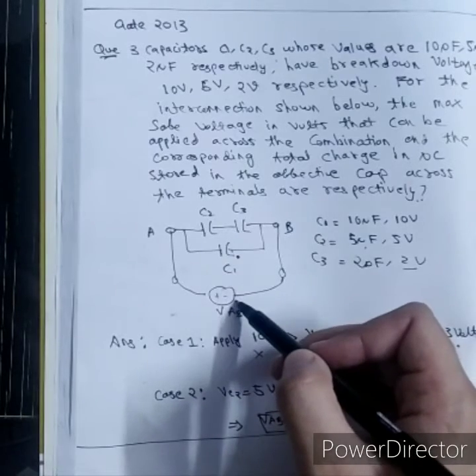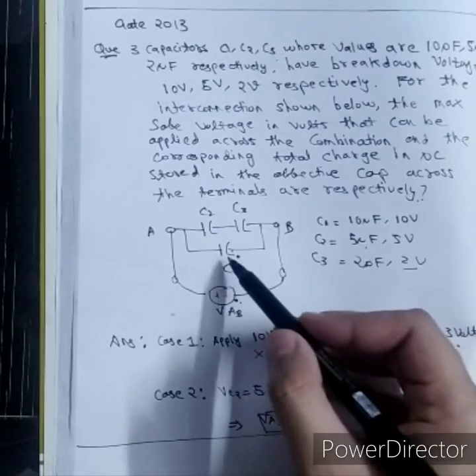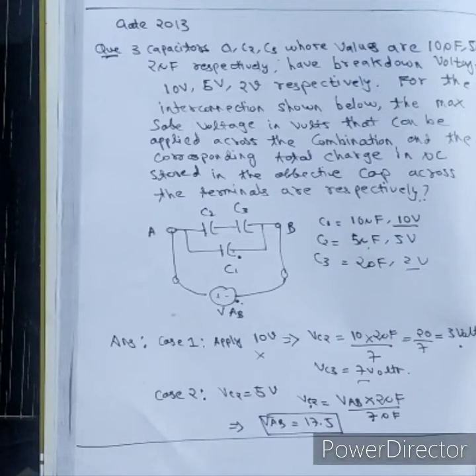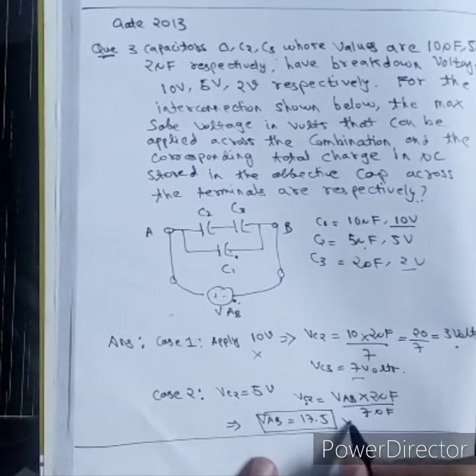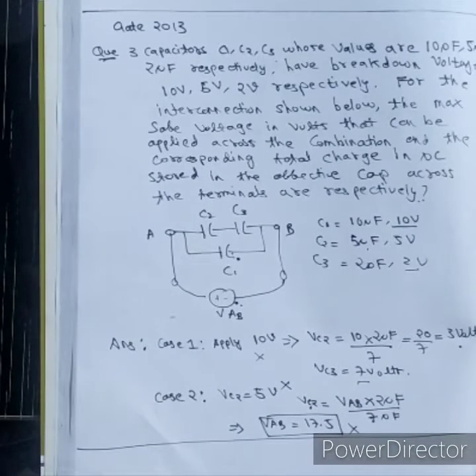If I apply 17.5V across capacitor C1, because C1 and this voltage source are in parallel, 17.5V will drop across C1. Maximum I can apply is 10V, so C1 will break down. This also won't work. Both cases won't work. Let's see case number 3.